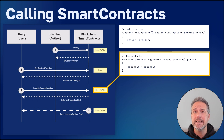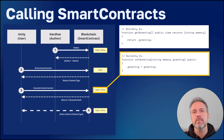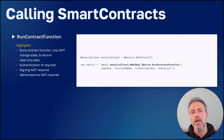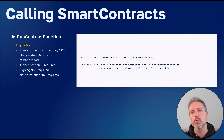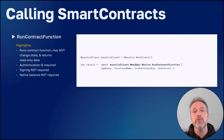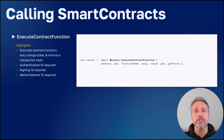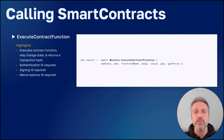With execute contract function, notice that the Solidity is changing state. Also notice that there's no return value here — the return value is always going to be the transaction hash. From the Unity side, we use Morales and call the appropriate method, passing in the relevant parameters to get the return value back. And here's the C-Sharp for execute contract function, where the return value coming back from Solidity will be that transaction hash.